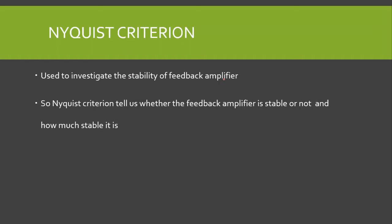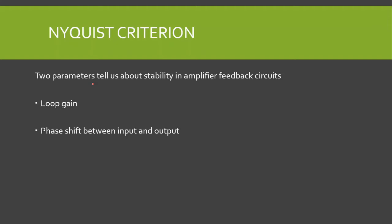The Nyquist criteria is used to investigate the stability of a feedback amplifier. It tells us whether the feedback amplifier is stable or not, and also how much stable it is — especially in terms of gain margin and phase margin. Two parameters are very important when discussing stability: the loop gain, which is the magnitude of the product beta-A, and the overall phase shift between input and output.